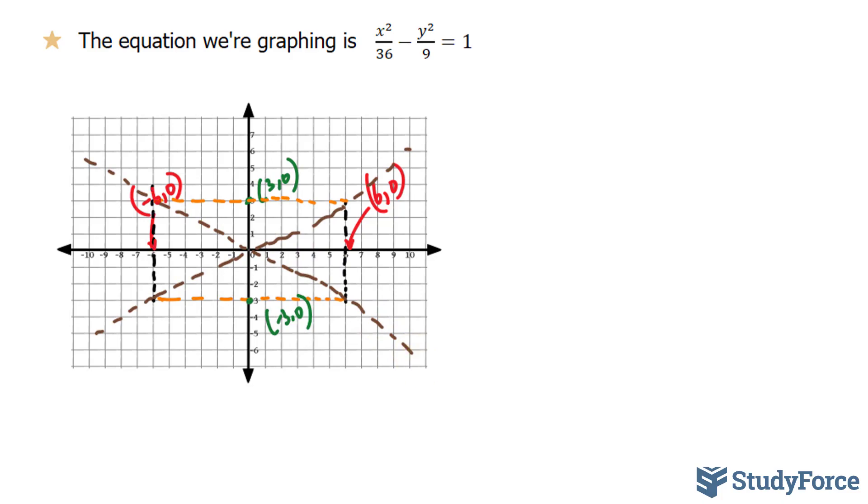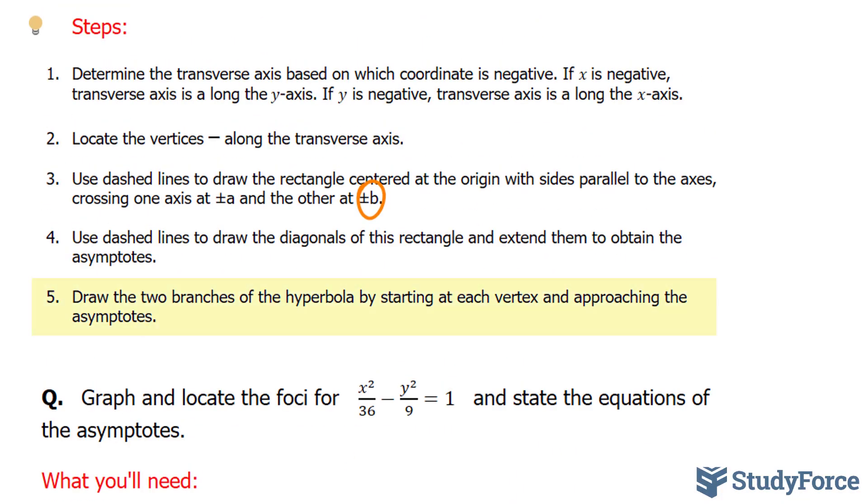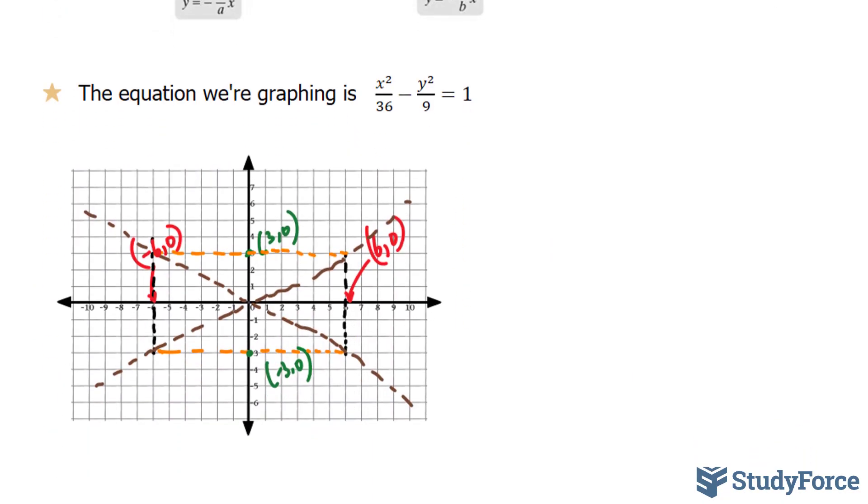The next step reads, draw the two branches of the hyperbola by starting at each vertex and approaching the asymptotes. So going back to this, we'll have one part of the graph looking like this.